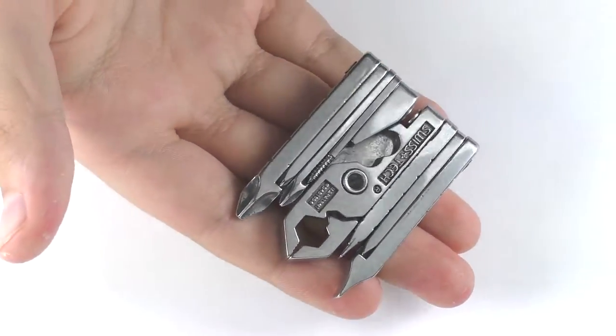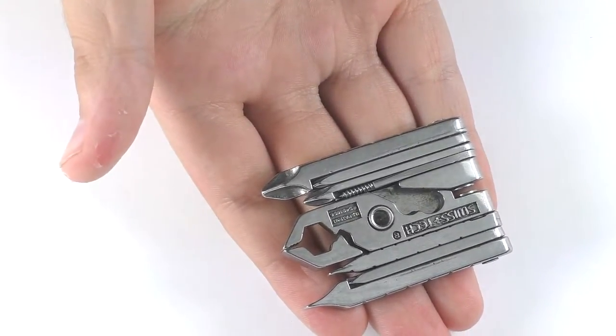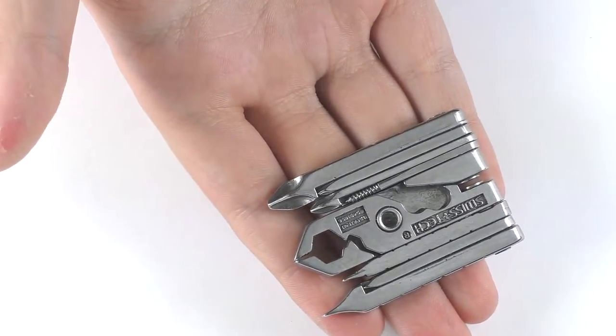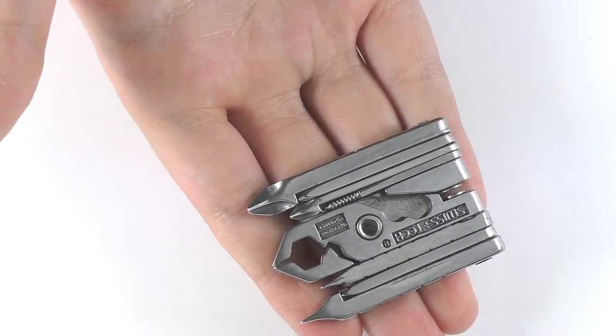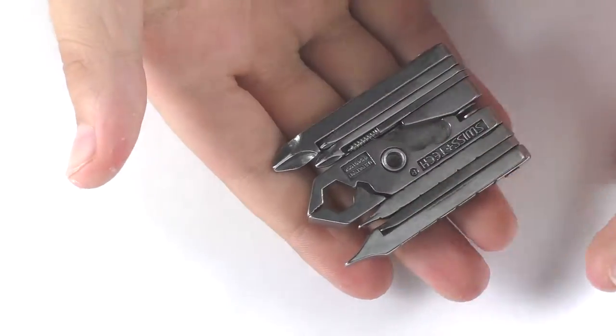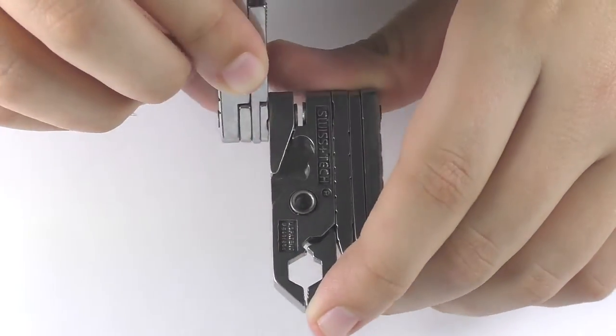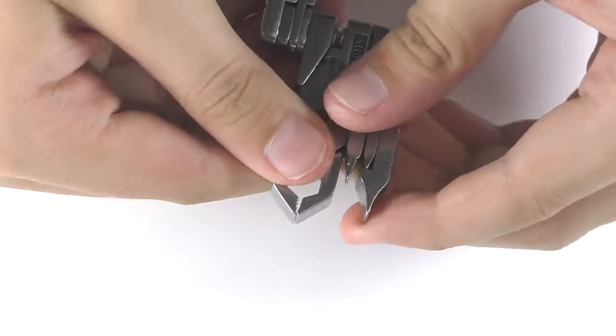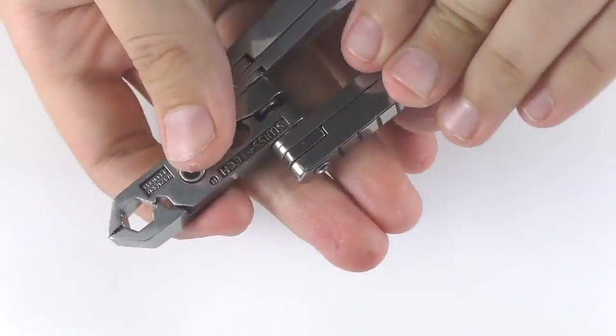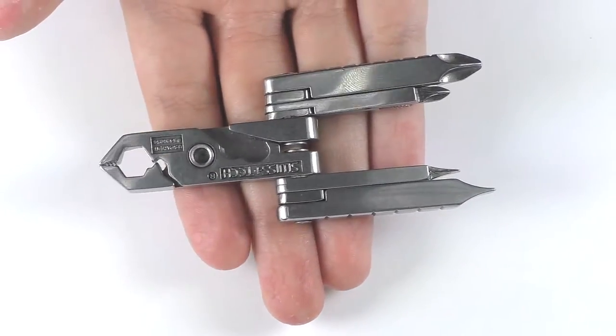It is a 19-in-1 tool that has a lot of tools in one little thing. And if you didn't know already, there are two arms on here that you can fold back. And this is what it looks like when it's folded out.